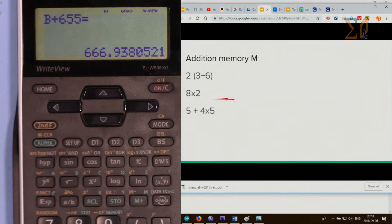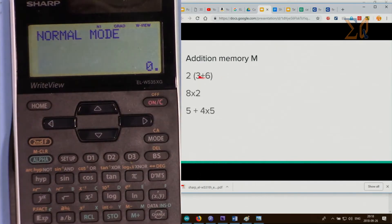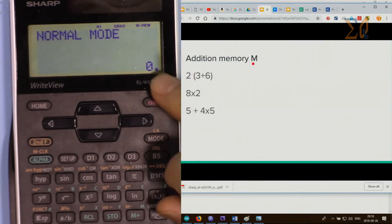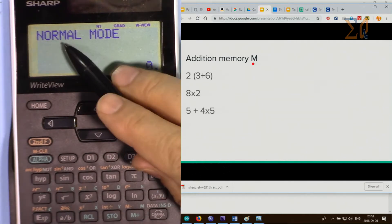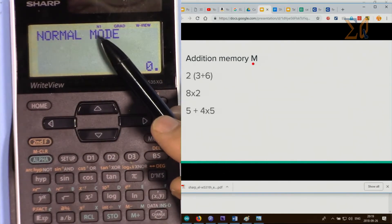Now let's use addition into memory. The other type of memory is that you want to add some calculation and keep it, then do another calculation and add it to the result, and so on. We use M for that purpose. Make sure we don't see M here. As soon as you store something into M, you will see that.